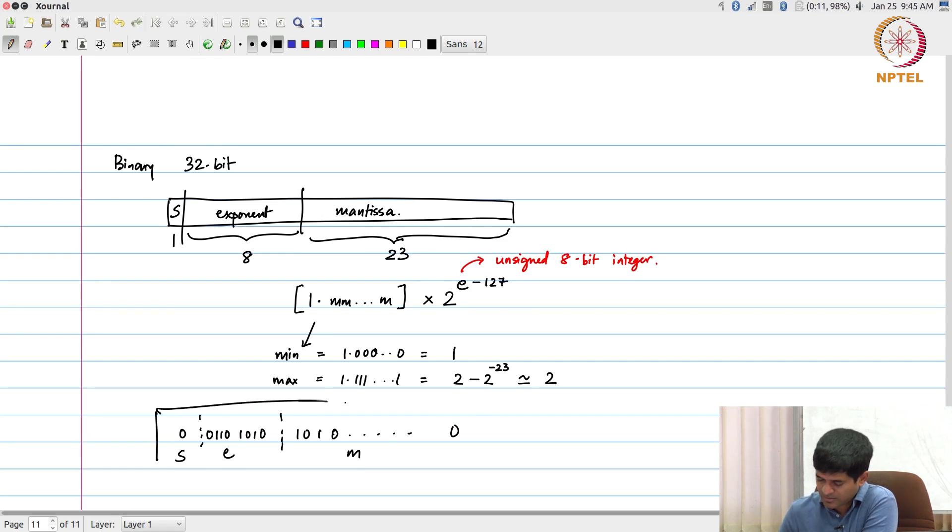So this value is going to be equal to 1.1010 times 2 to the power minus 127, or in other words, some 1.5 something times 2 to the power minus 21, which is approximately equal to 1.5 times 10 to the power minus 7. So if I had a number like this, this is how I would interpret it.